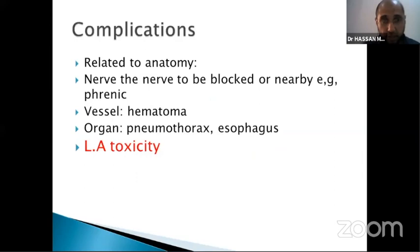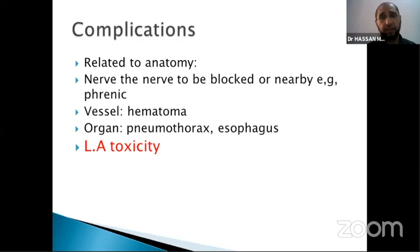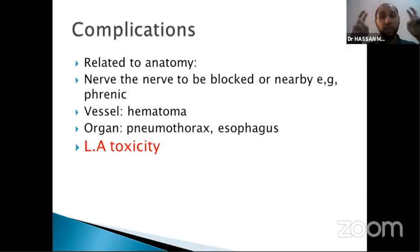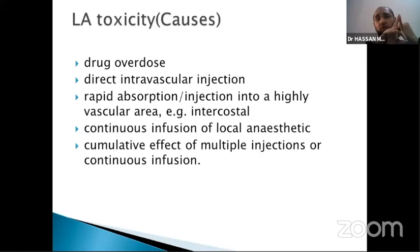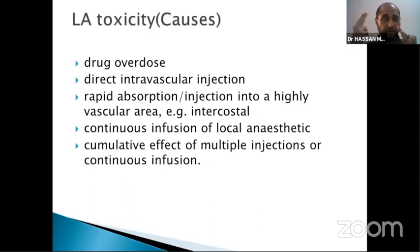Complications are really related to anatomy — just remember that structures in proximity to your needle may be injured: the nerve itself, adjacent nerves like the phrenic nerve in a supraclavicular block, hematoma, and organs like pneumothorax or esophagus. The most important complication to keep in mind and mention clearly is local anesthetic toxicity. The causes are: drug overdose (calculating the dose incorrectly), endovascular injection (even 20 mg of xylocaine near the CNS, like a stellate ganglion block, is enough to cause seizures and toxicity), and rapid absorption in highly vascular areas like the intercostal space.